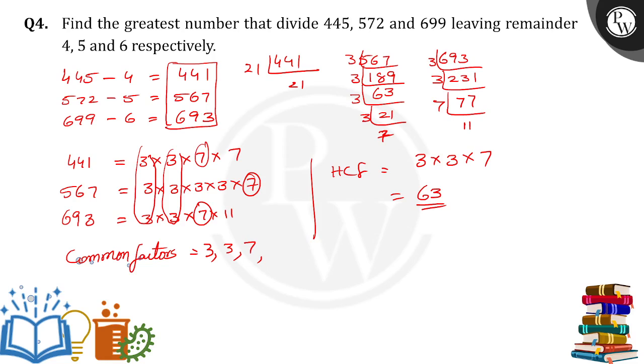So therefore, 63 is the greatest number that will divide these three numbers, leaving 4, 5, and 6 as remainders. Thank you.